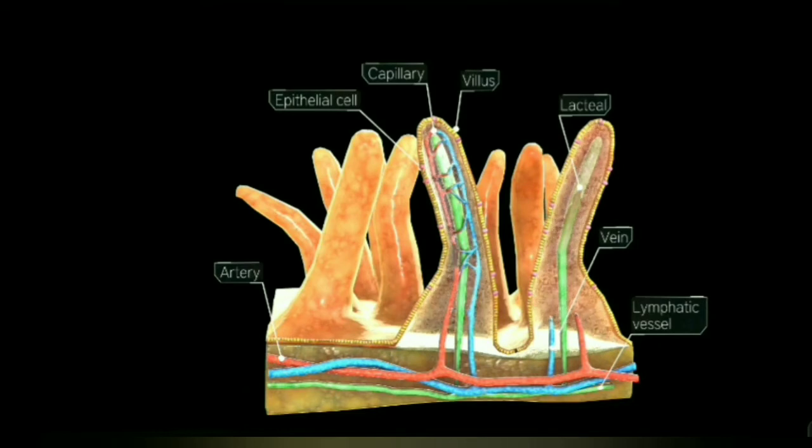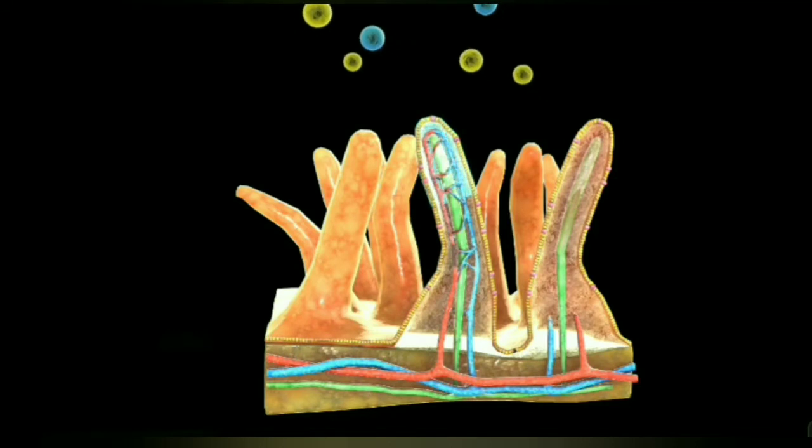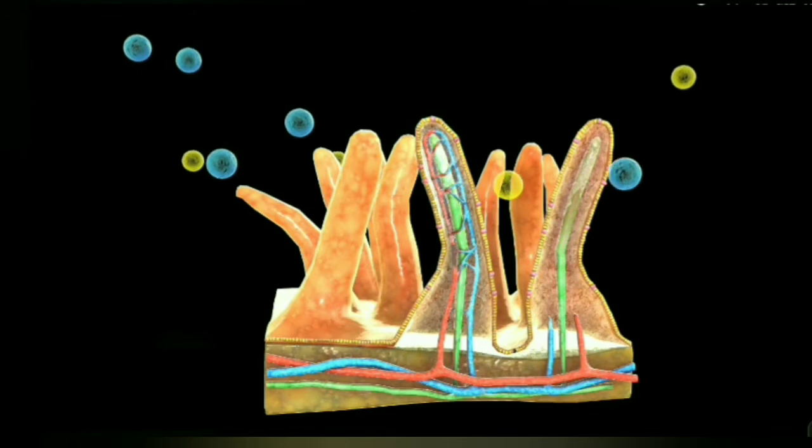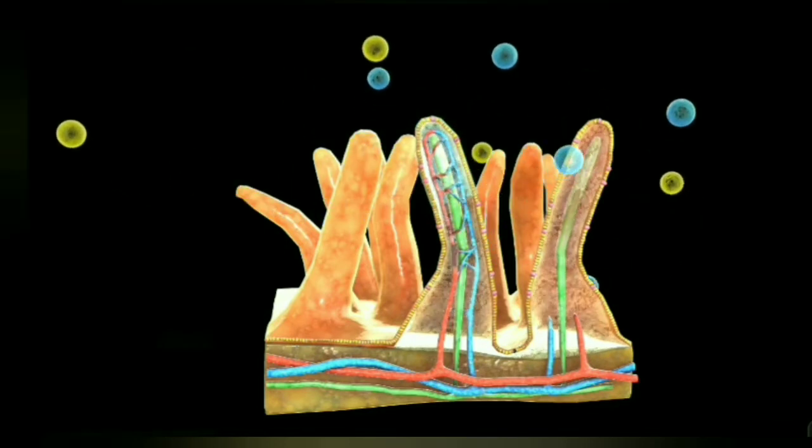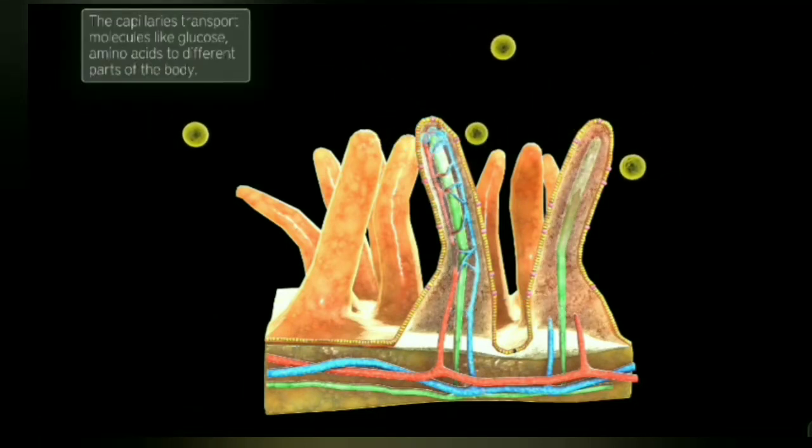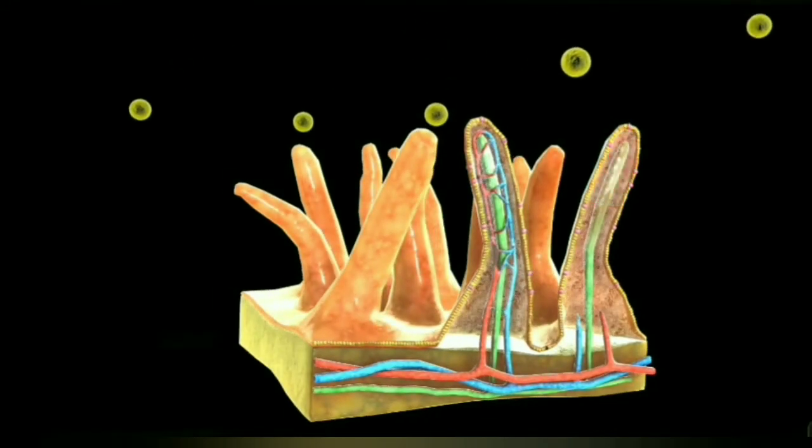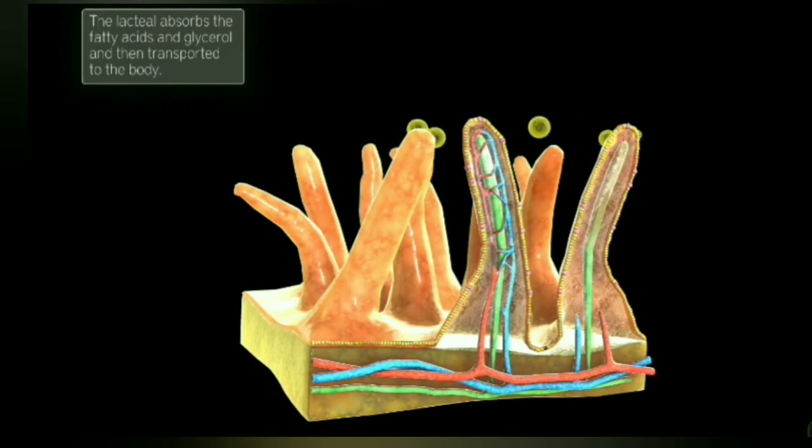The blue one is glucose and yellow one is fatty acids. Now glucose enters into capillaries. Glucose is in blue color. Not only glucose, amino acids also enter into capillaries. The capillaries transport the amino acids and glucose through all over the body. Now lacteal absorbs fatty acids and glucose. It transports the fatty acids and glucose through all over the body.